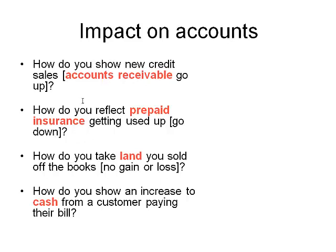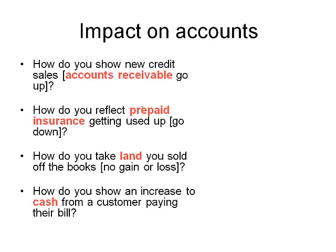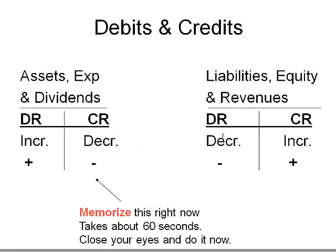Second: how do you reflect prepaid insurance getting used up? Prepaid insurance is going to go down — it's an asset. To get an asset to go down, you credit it. So this would credit prepaid insurance, and the debit would be to insurance expense to make expenses go up. A debit makes an expense go up.